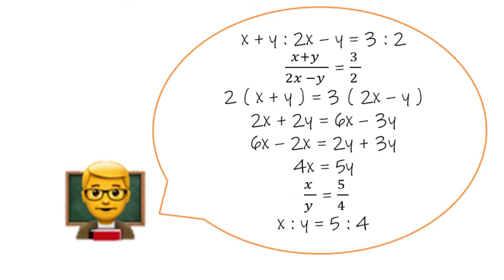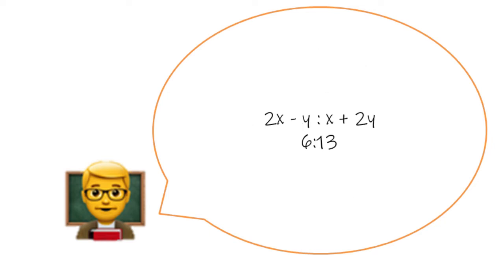As mentioned above, ratios can be calculated just as fractions. The ratio x to y is found to be 5 to 4. From the ratio given in question part A, and that x to y equals 5 to 4, it can be found that 2x minus y to x plus 2y equals to 6 to 13.